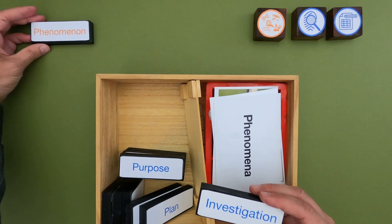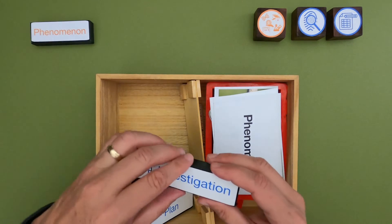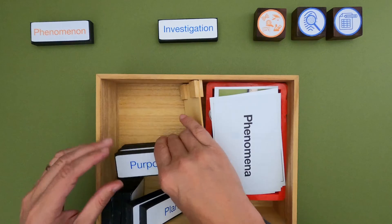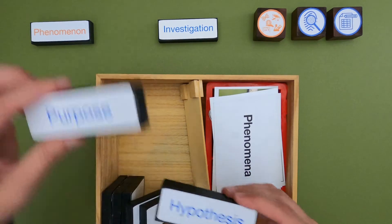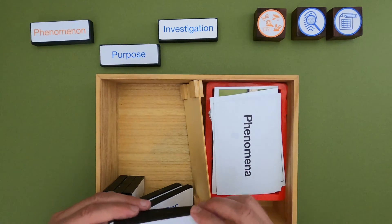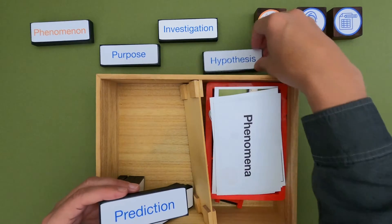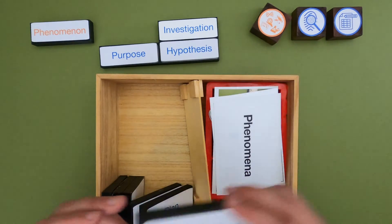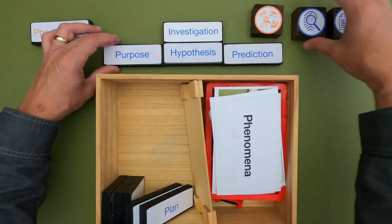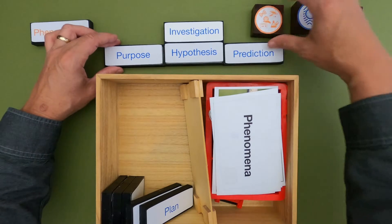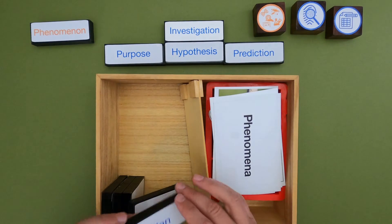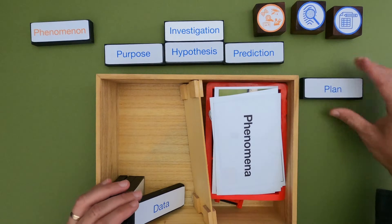The next thing is to start thinking about what are the good elements of an investigation, and there are three things that we should start with. The first is the purpose — why are we doing the investigation? The next is the hypothesis, and then the final is going to be some kind of a prediction that we're making related to the investigation. Once you've done that, then we can start planning the investigation.